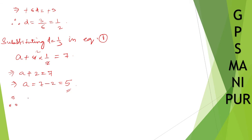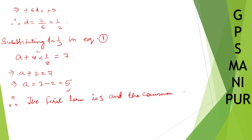Therefore, the first term a is equal to 5, and the common difference d is equal to one by two. That's all. I hope the answer is correct. Thank you so much. We will meet in the next video.